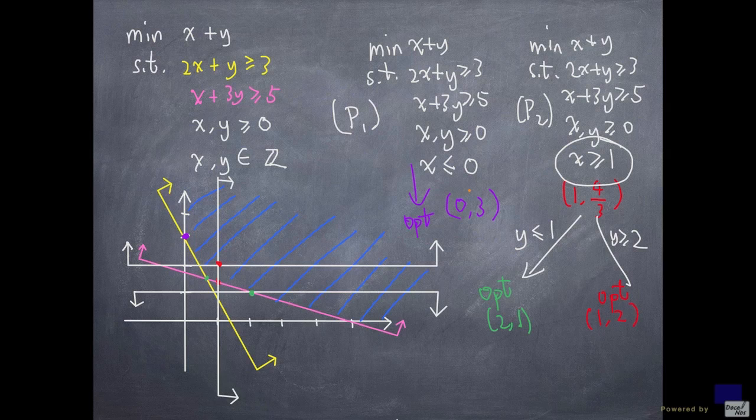Now let's take a look. So the objective function value for 0 comma 3 is 3. But it turns out that all three solutions have the same objective function value. 2 comma 1 and 1 comma 2 also have objective function value equal to 3. And so all three are optimal solutions for the original problem.